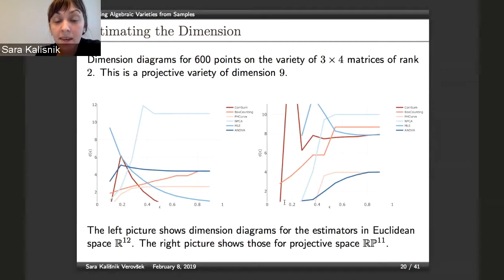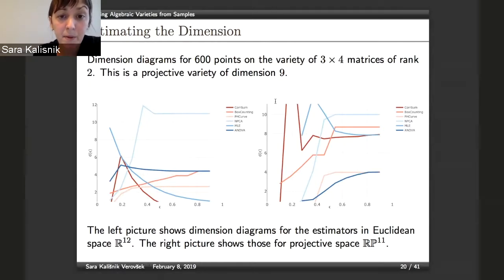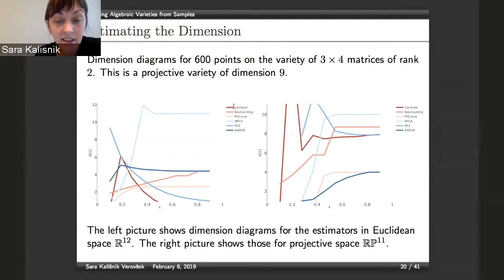There are other estimates, but for the sake of time I won't go through all of them — they're carefully described in our paper with references. We implemented all of these in terms of what we call the dimension diagram. Rather than selecting a particular ε and having the software output a single number, we look at the behavior over a range of ε values.